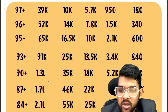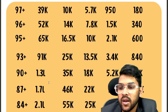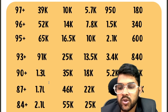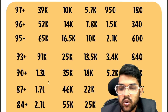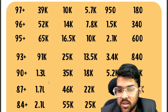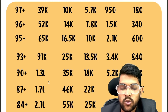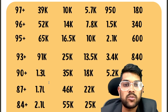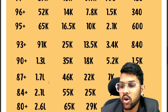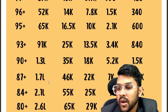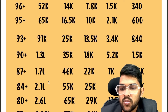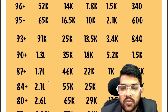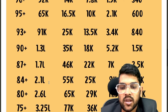For 90 percentile: General 1.3 lakh, OBC 35000, EWS 18000, SC 5200, ST 1500. For 87 percentile: General 1.7 lakh, OBC 46000, EWS 22000, SC 7000, ST 2500.